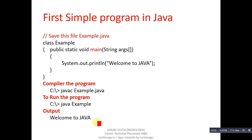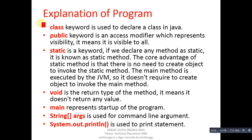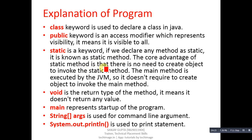Here is the theoretical explanation: 'class' is a keyword used to declare classes in Java. 'public' is an access modifier representing visibility, meaning it is visible to all. 'static' is also available in C++; if we declare any method as static it is called a static method. The core advantage is there is no need to create an object to invoke a static method. The main method is executed by the JVM so it doesn't require creating an object.